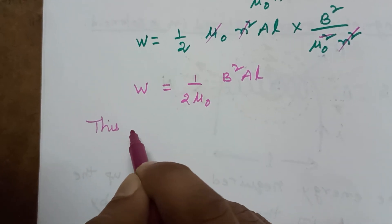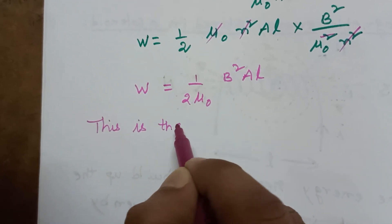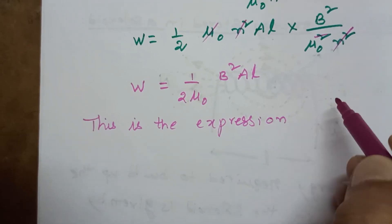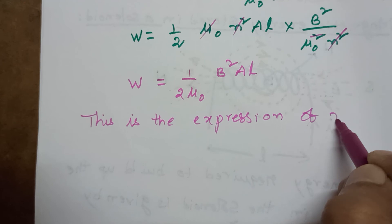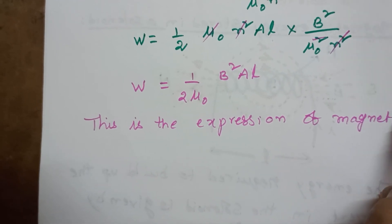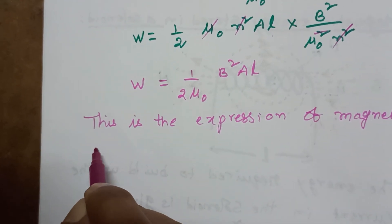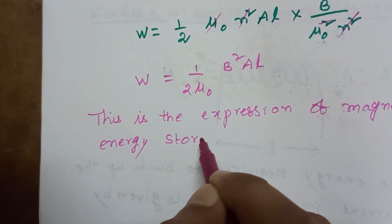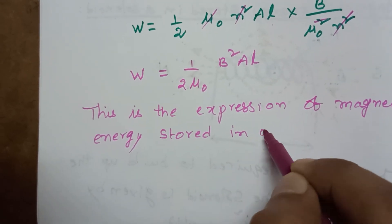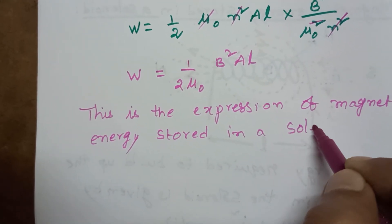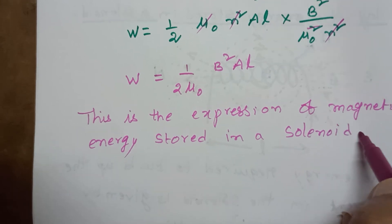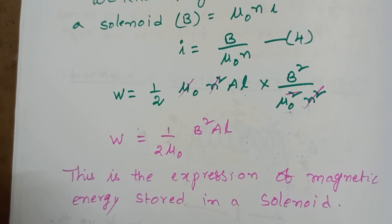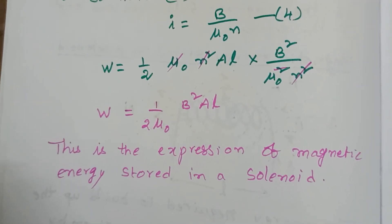So the expression for magnetic energy stored in a solenoid is W equals B squared A L divided by 2 mu-naught. I think you understood the concept. Thank you.